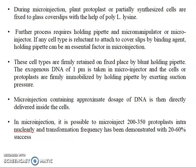The cells are firmly retained in a fixed place by a blunt holding pipette. The exogenous DNA, approximately one picometer, is taken into the micro injector. The cells or protoplasts are firmly immobilized by the holding pipette by exerting suction pressure. While applying the pressure, we need to suck it firmly, and the cell should be immobilized when we are injecting our DNA into the protoplast or cell.